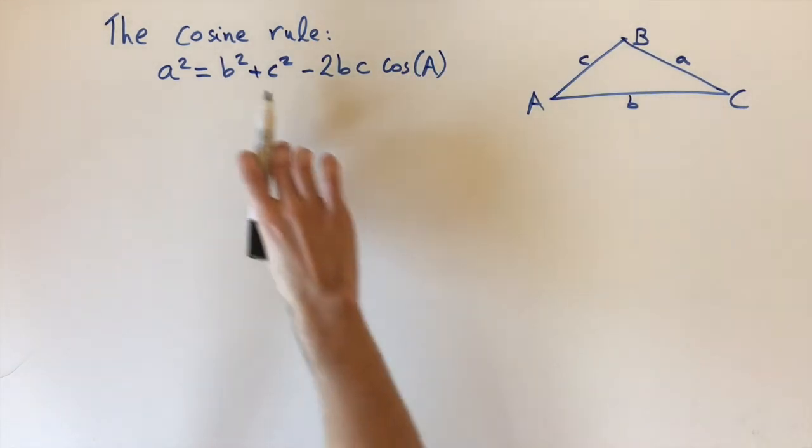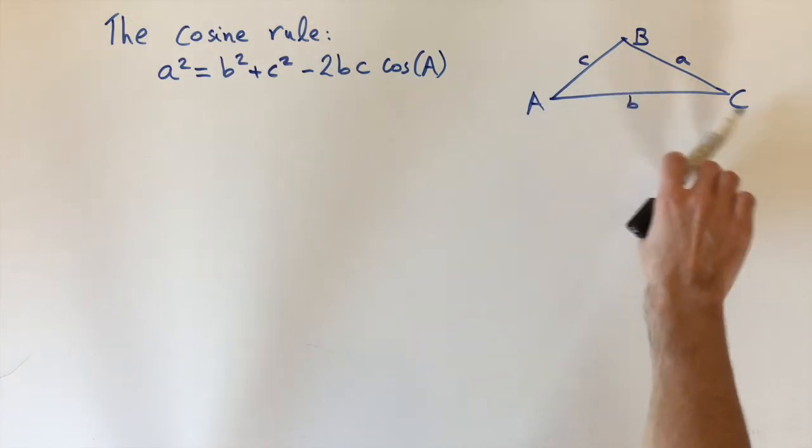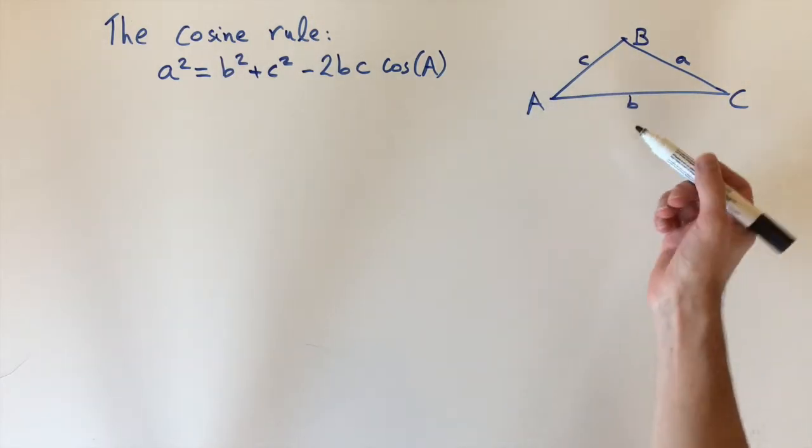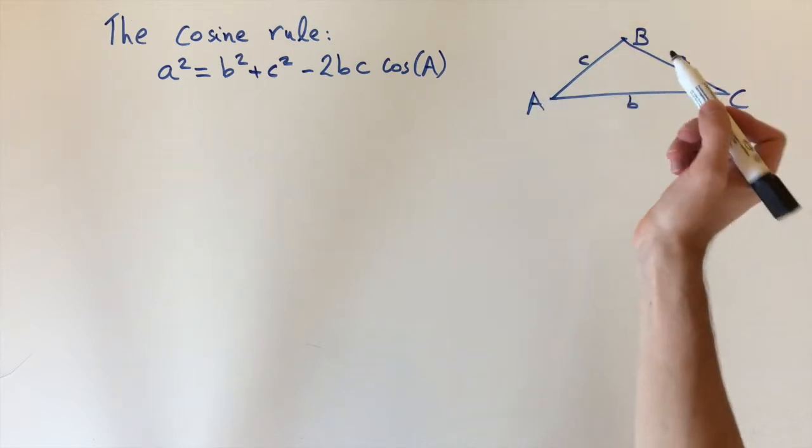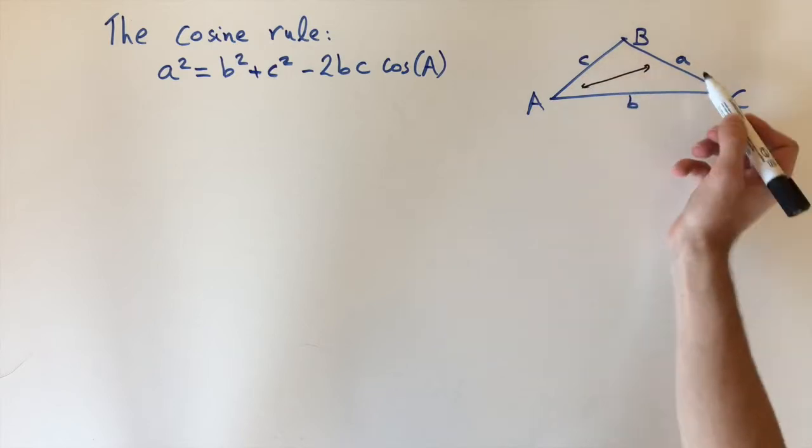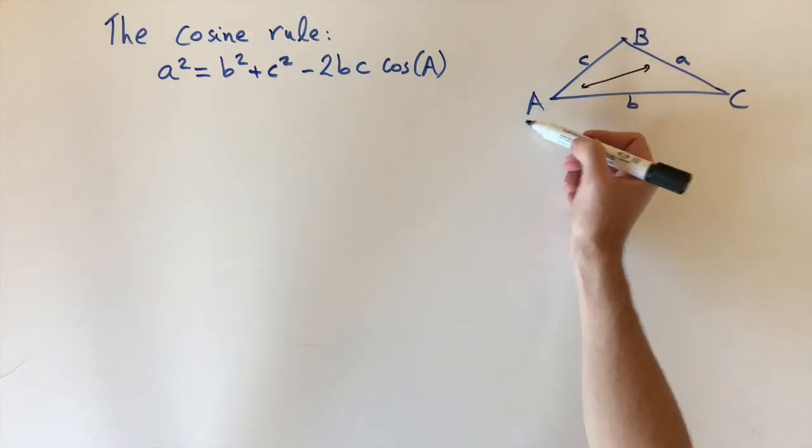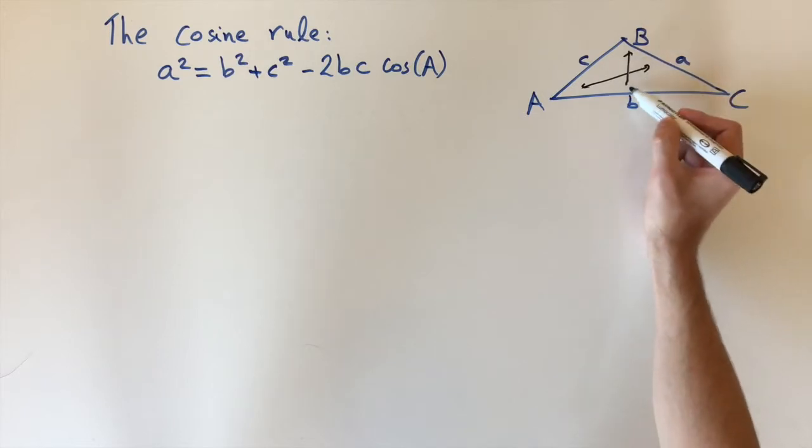Now it's really important when we use this formula that the lengths of the little letters, so little a, little b, little c, are associated with the angles of capital A, capital B, capital C, but the corresponding opposite angles. So the length little a is opposite to the angle capital A, and it's the same for all the other angles.